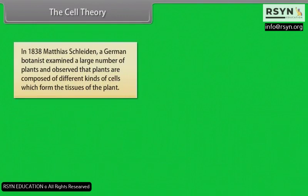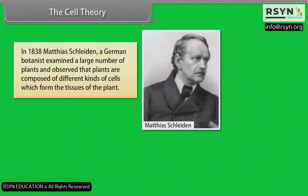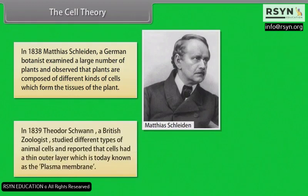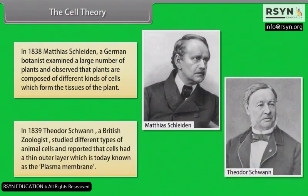In 1838, Matthias Schleiden, a German botanist, examined a large number of plants and observed that plants are composed of different kinds of cells which form the tissues of the plant. In 1839, Theodore Schwann, a British zoologist, studied different types of animal cells and reported that cells had a thin outer layer, which is today known as the plasma membrane.